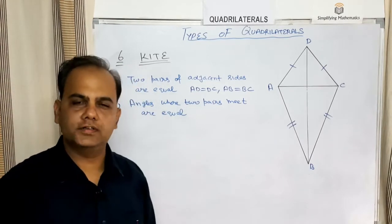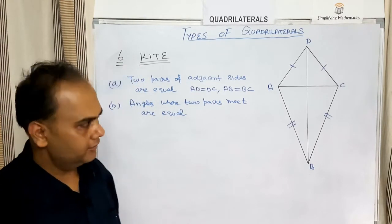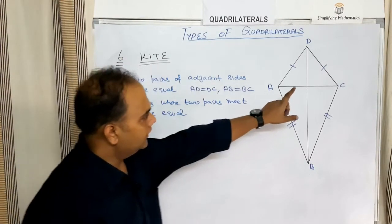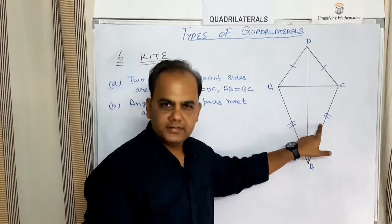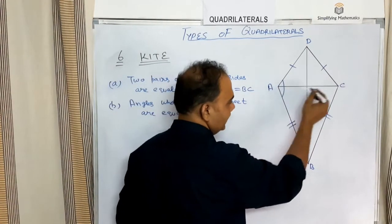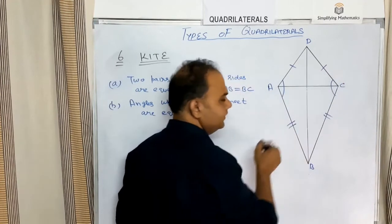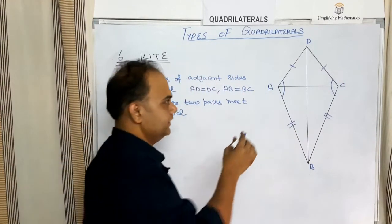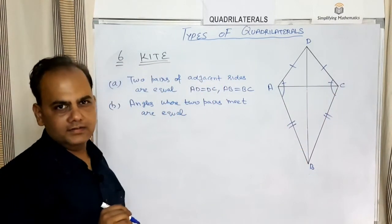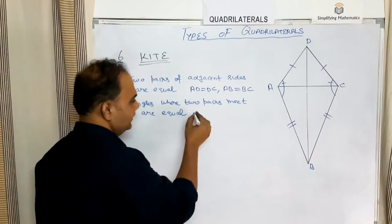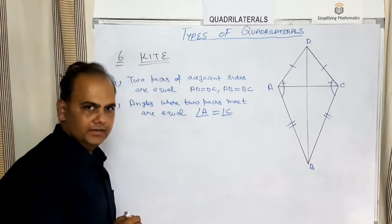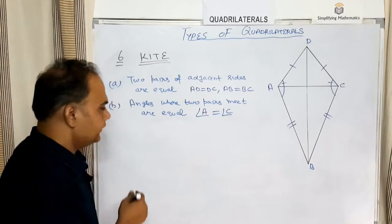The second property of a kite is that the angles where the two pairs of adjacent sides meet are equal. The two pairs meet at angle A and angle C, so angle A equals angle C.